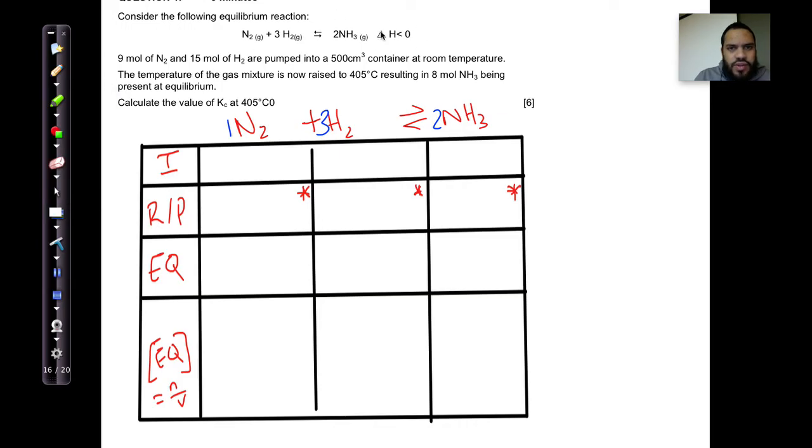There's the reaction. We are told the reaction is exothermic. 9 moles of N2 plus 15 moles of H2 are pumped into a 500 cubic centimeter container. Now, this is a very important thing. To go from cubic centimeters to cubic decimeters, all you need to do is divide by 1,000.